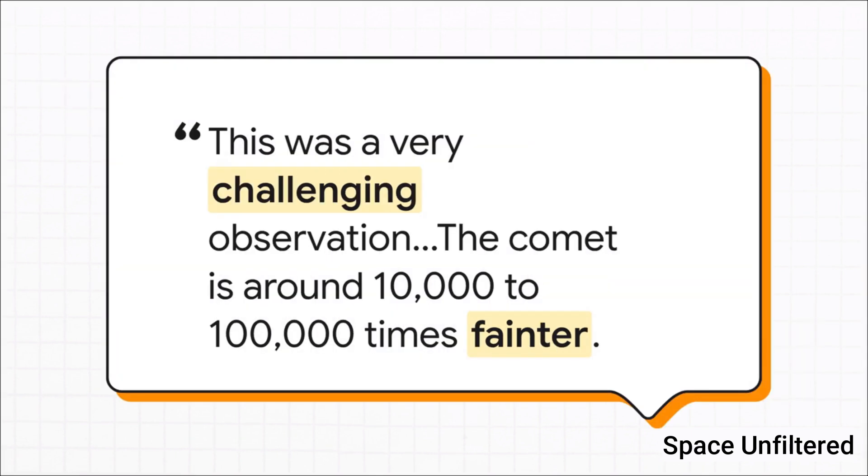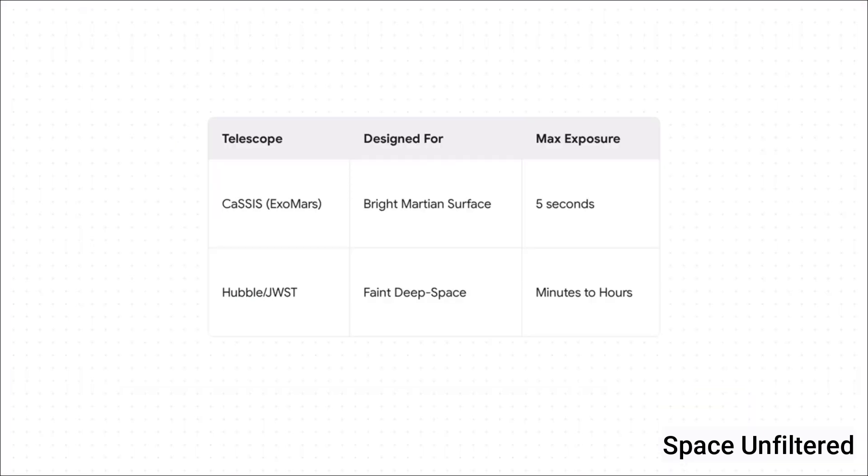The second clue has to do with the instrument itself. As the principal investigator Nick Thomas explained, it was an incredibly challenging observation. The CaSSIS camera was built to take pictures of the bright surface of Mars, not to try and catch the faint whispers of light from deep space. CaSSIS can only keep its shutter open for a maximum of five seconds. Compare that to big observatories like Hubble or the JWST, which can stare at a target for minutes or even hours. In just five seconds, the comet's incredibly faint tail just didn't send enough light to be picked up.